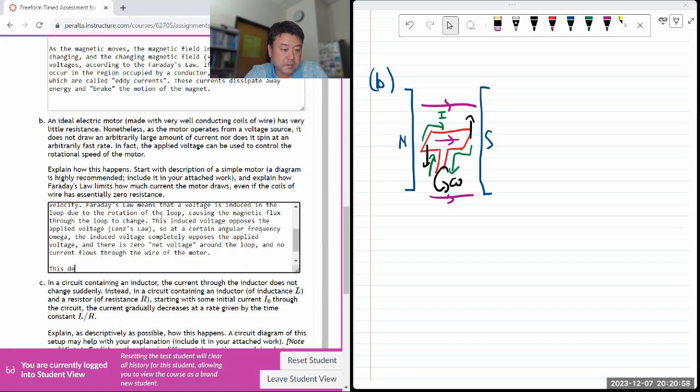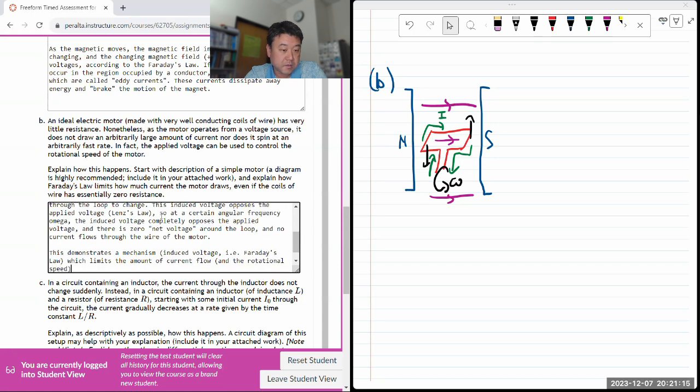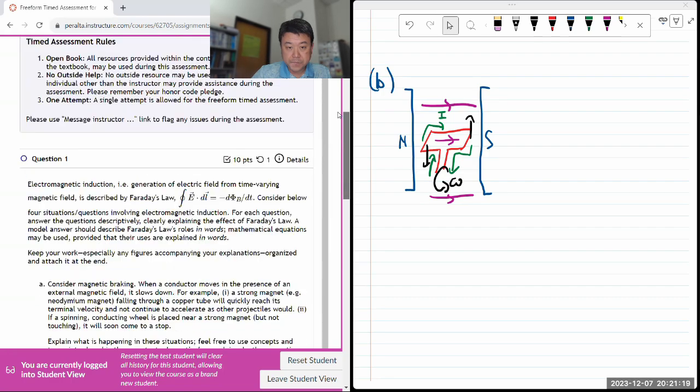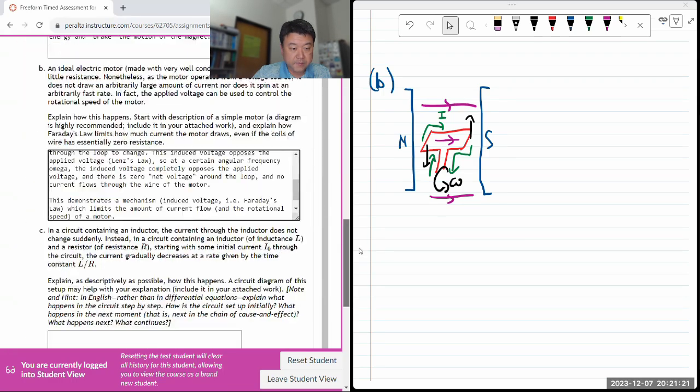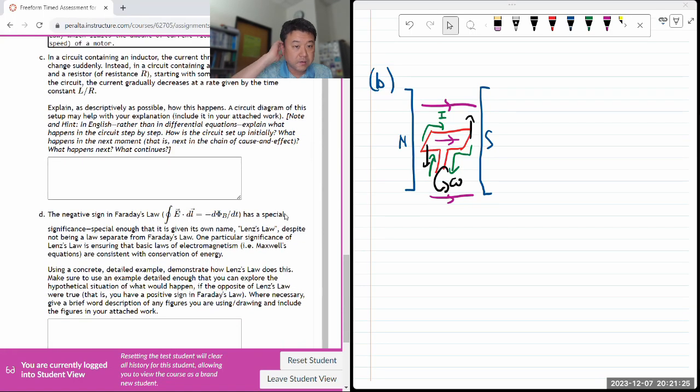So at a certain angular frequency, omega, the induced voltage completely opposes the applied voltage. And there is a zero net voltage around the loop. And no current flows through the wire of the motor. This demonstrates the mechanism induced voltage, i.e. Faraday's law, which limits the amount of current flow and the rotational speed of a motor. Yeah, that's the answer. 11 minutes. All right. Making good time, but I do have to kind of go quickly.